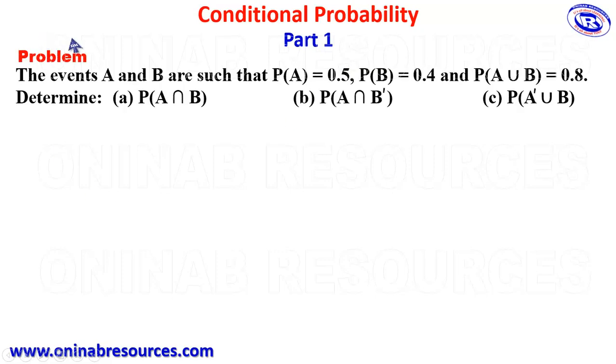We have our problem here. The events A and B are such that P of A is equal to 0.5, P of B is equal to 0.4, and P of A union B is equal to 0.8.